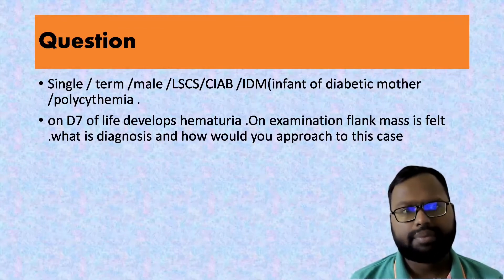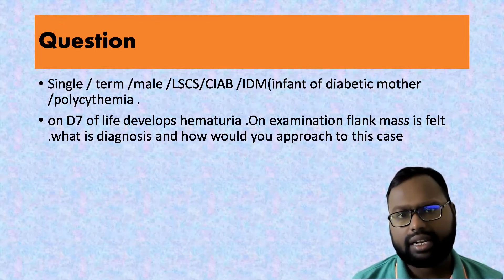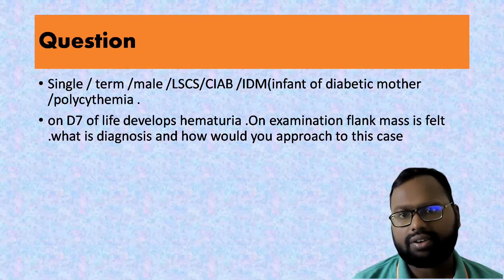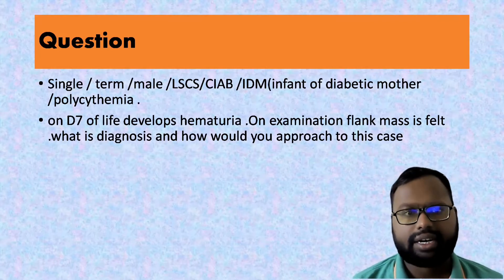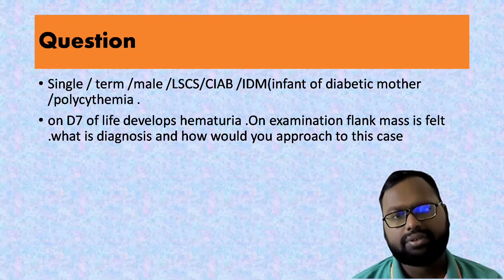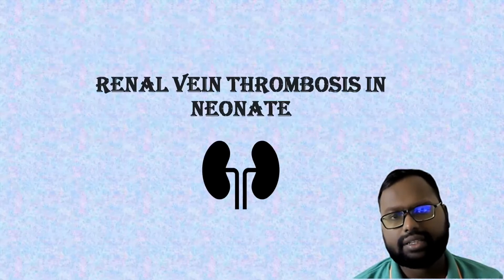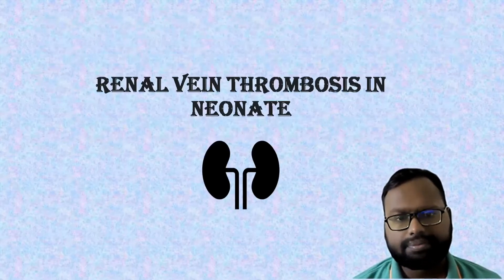Hello friend, welcome to my channel Five Minute Pediatric. Today I will discuss a case related to a neonate. The case involves a single term male delivered by LSCS who cried immediately after birth. The child was an infant of a diabetic mother and was polycythemic. On day seven of life, he develops hematuria and on examination a flank mass is felt. The diagnosis is renal vein thrombosis.